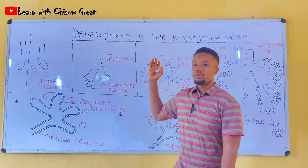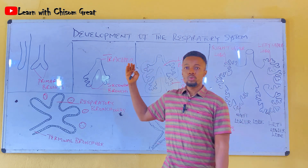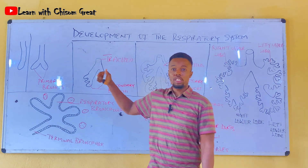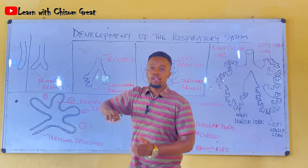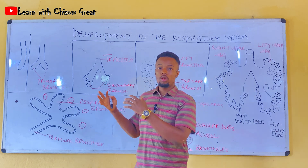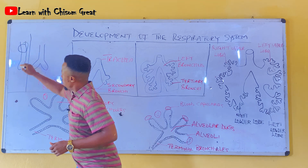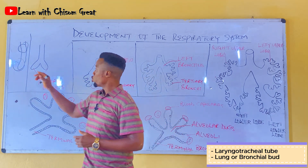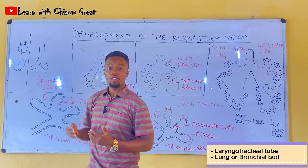In our last teaching, we've been able to see how the respiratory diverticulum gave rise to the laryngotracheal tube and also the lung bud. This is the laryngotracheal tube and this is the lung bud, as you can see. And also, this lung bud can also be called the bronchial bud.